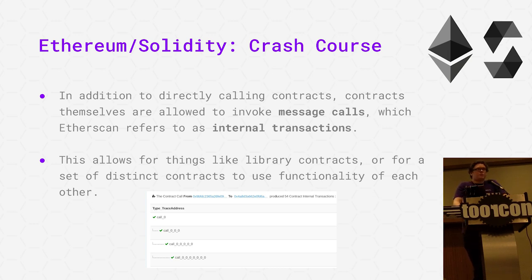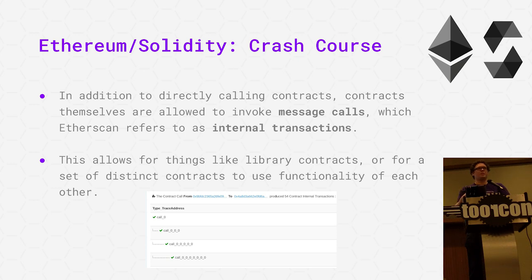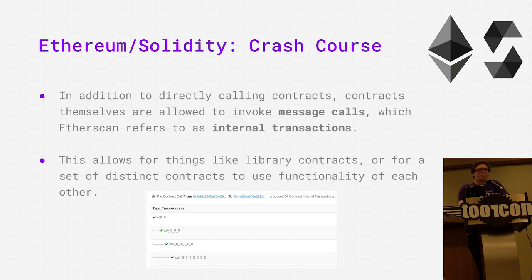In addition to directly calling contracts, contracts can actually call other contracts. This is done through something called message calls, also referred to as internal transactions. This allows for things like library contracts — you deploy a library once rather than storing a lot of code multiple times, then deploy other contracts that refer to that library. You can build complex chains where one contract updates others that are related, but they're all standalone units. It's useful, but it also adds complexity that allows you to hide some interesting stuff.